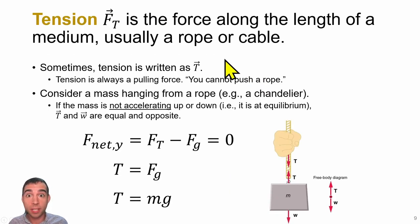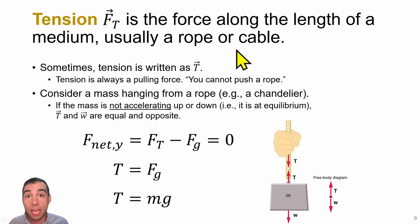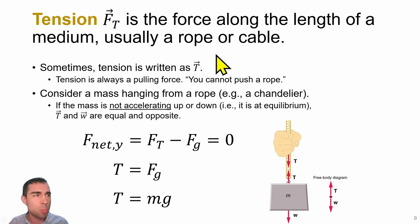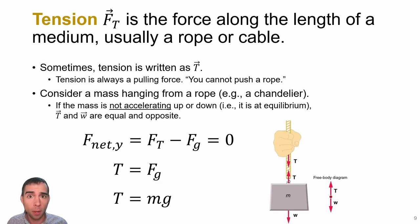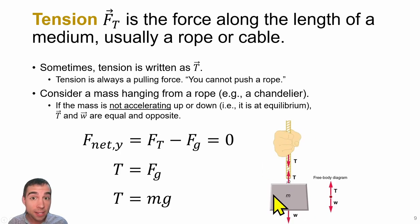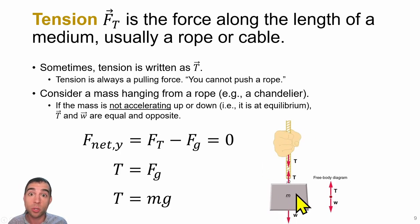Tension force is a force applied through some medium like a rope or cable. It will always pull, because you can't push an object by pushing a rope, but you can pull it along. Here we have an example of a mass that feels a weight force down toward the center of the earth.